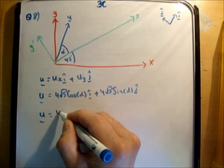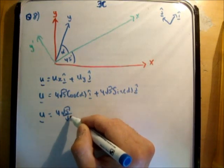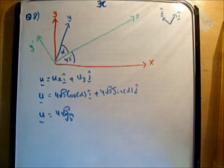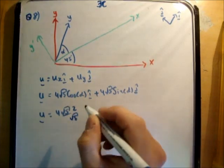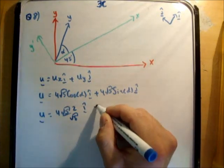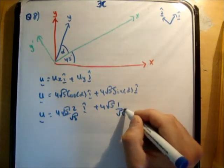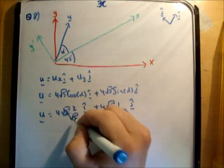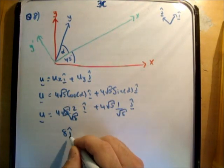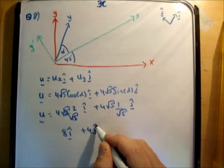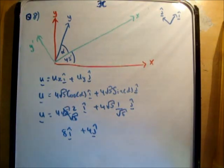So u is equal to 4 root 5 times 2 over root 5 i-hat plus 4 root 5 times the sine, which is 1 over root 5 j-hat, giving me 8 i-hat plus 4 j-hat. So we're doing okay so far.